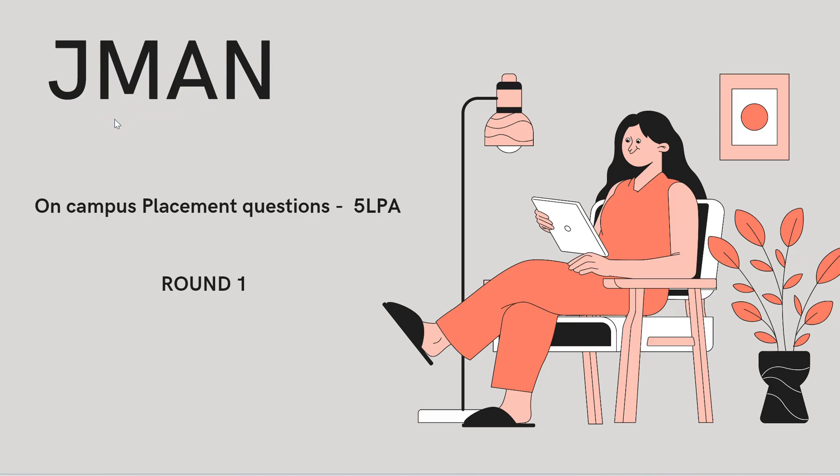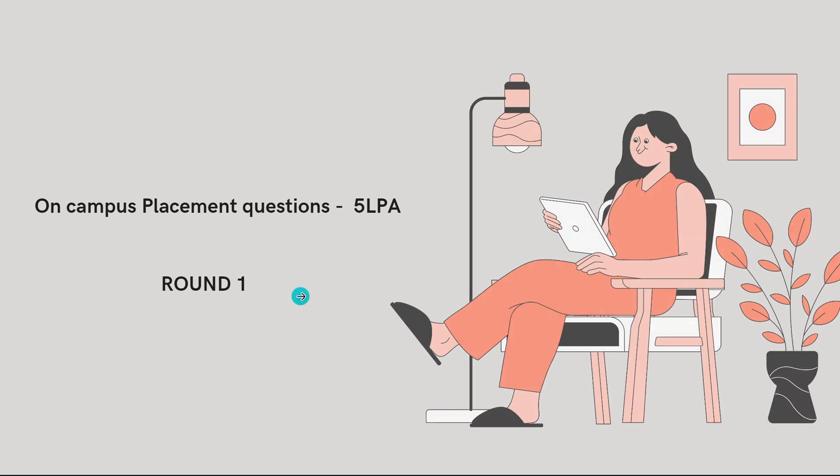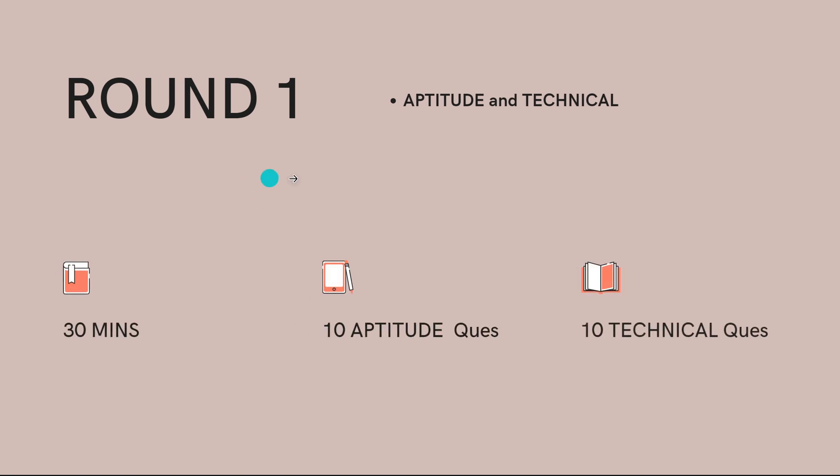Hello everyone, today we are going to see Jman on-campus placement questions for 5 LPA. This is Round 1, which consists of aptitude and technical rounds. It is for 30 minutes - 10 questions from aptitude and 10 questions from technical.